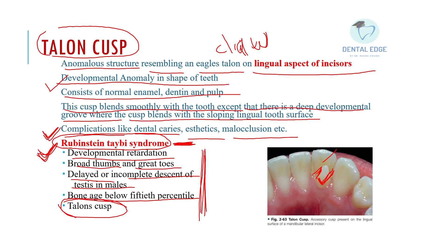To summarize: talon's cusp resembles an eagle's claw, is present on the lingual aspect of maxillary or mandibular incisors, and is a developmental anomaly in the shape of teeth. A deep developmental groove forms where the talon's cusp merges with the lingual surface of the tooth, which can lead to dental caries, aesthetic issues, or malocclusion. The associated syndrome is Rubinstein-Taybi syndrome.